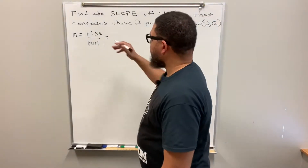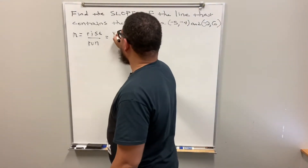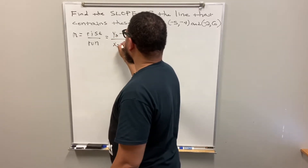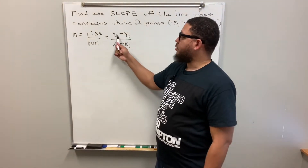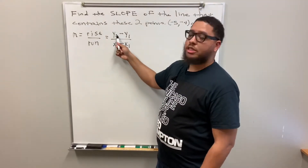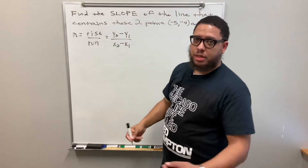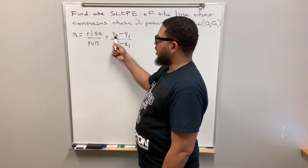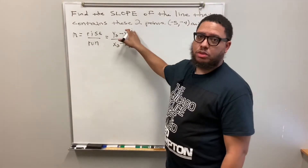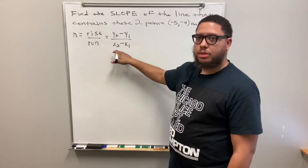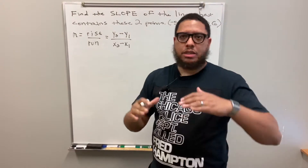The actual formula we use, where we replace the letters with numbers, looks like this: (y₂ − y₁) divided by (x₂ − x₁). Take a moment to write that down. Note that the 2 and 1 are subscripts — not exponents — because they indicate which point the value comes from. This formula represents the change in y values divided by the change in x values, and that gives us our slope.